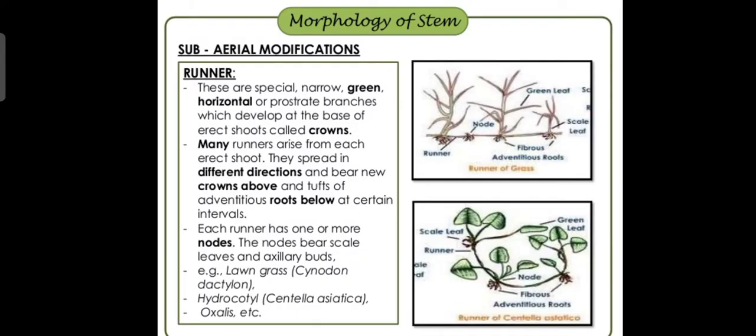What are the basic sub-aerial modifications of stem? First, we have runners. Runners are special, narrow, green, horizontal or prostrate branches which develop at the base of erect shoots called crowns.